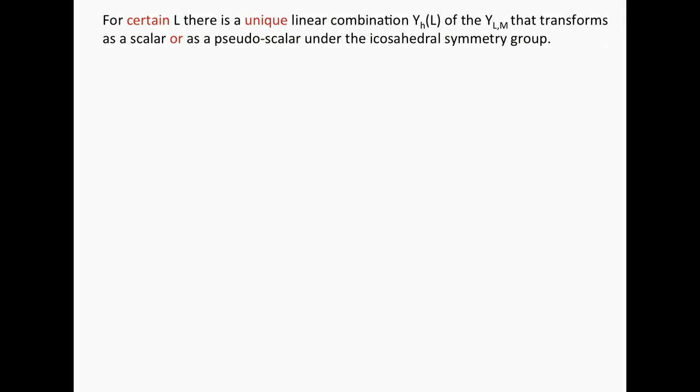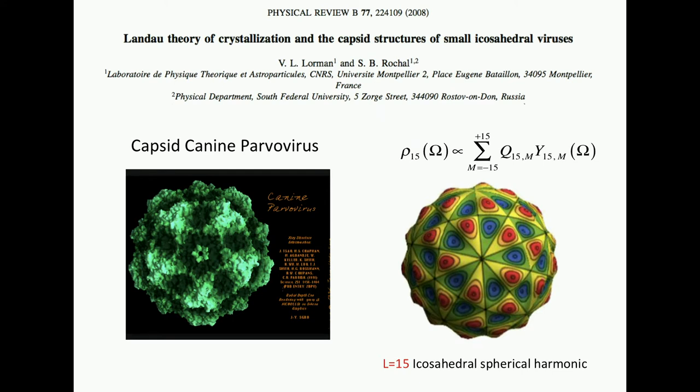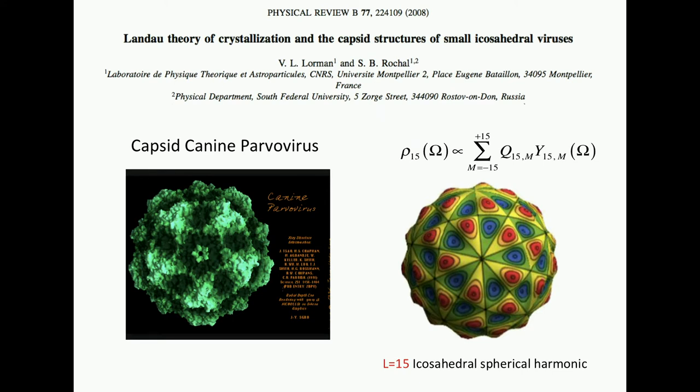First of all, let's go a little bit back what we mean by icosahedral spherical harmonic. So a little bit more intellectual history. And this is Mr. Felix Klein. It's a different Klein you heard before. He lived in the 1850s. And he's the one who invented them. He was a number theorist. And the statement is that for certain L, not all L, there is a unique linear combination of spherical harmonics. You call it Y sub H. I don't know where H comes from. That transforms as a scalar under the icosahedral symmetry group or as a pseudo-scalar.